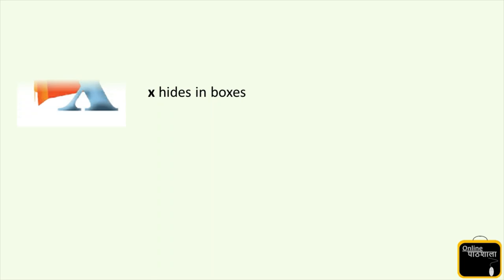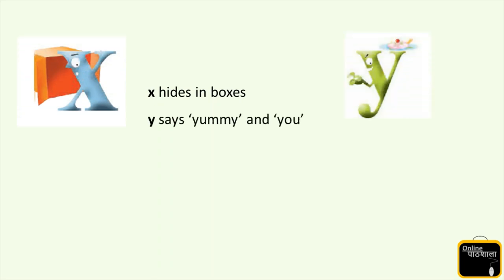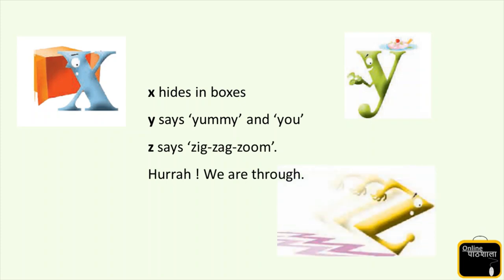X hides in the boxes. Y says yummy and you. Z says zigzag zoom - hurrah we are through! Kids, X is trying to hide in the box - maybe he is playing hide and seek. And Y is eating something and saying it's yummy. And Z is running like a zigzag zoom, saying now you know what all alphabets are doing, A to Z. Let's try to run after him.